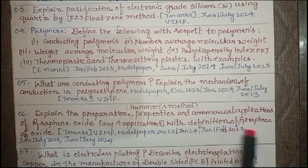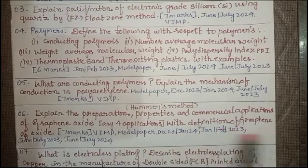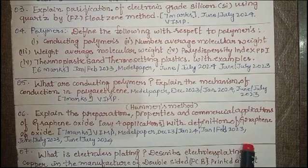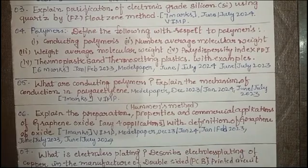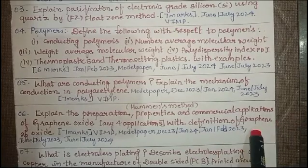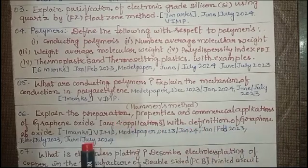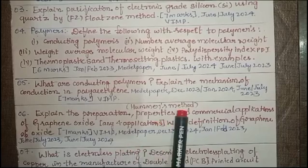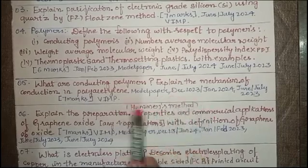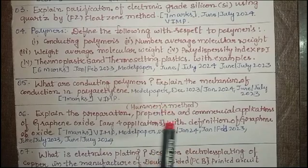Moreover, with the definition of graphene oxide, don't forget about the definition. If they may ask, if they don't ask about the definition, you have to write the definition and you have to write the diagram of the graphene oxide. You have to explain the properties, preparation and commercial application of graphene oxide with respect to Hummers method. This is what they have mentioned here in your syllabus - with respect to Hummers method you have to explain the graphene oxide.